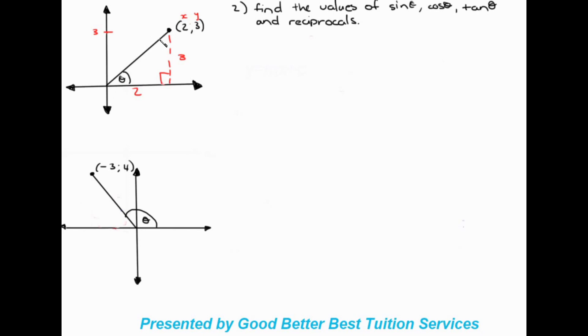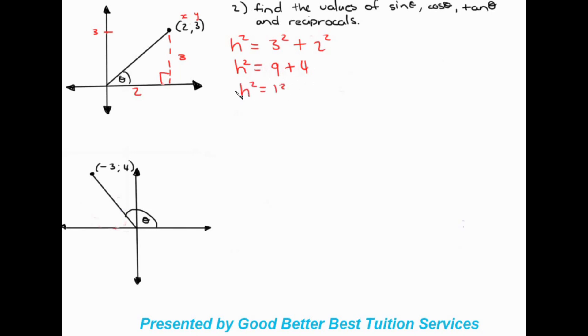But we don't have the hypotenuse. So we're going to solve for the hypotenuse. If we remember, h squared is equal to the sum of the other two sides squared, so it's going to be three squared plus two squared. h squared equals nine plus four, so h squared equals thirteen. To get h by itself we take the square root of both sides.